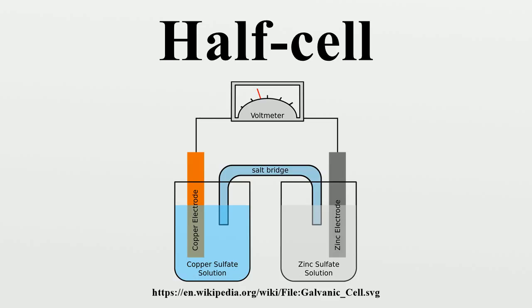A standard half-cell, used in electrochemistry, consists of a metal electrode in a one-molar aqueous solution of the metal's salt at 298 Kelvin. The electrochemical series was generated by measuring potential differences.